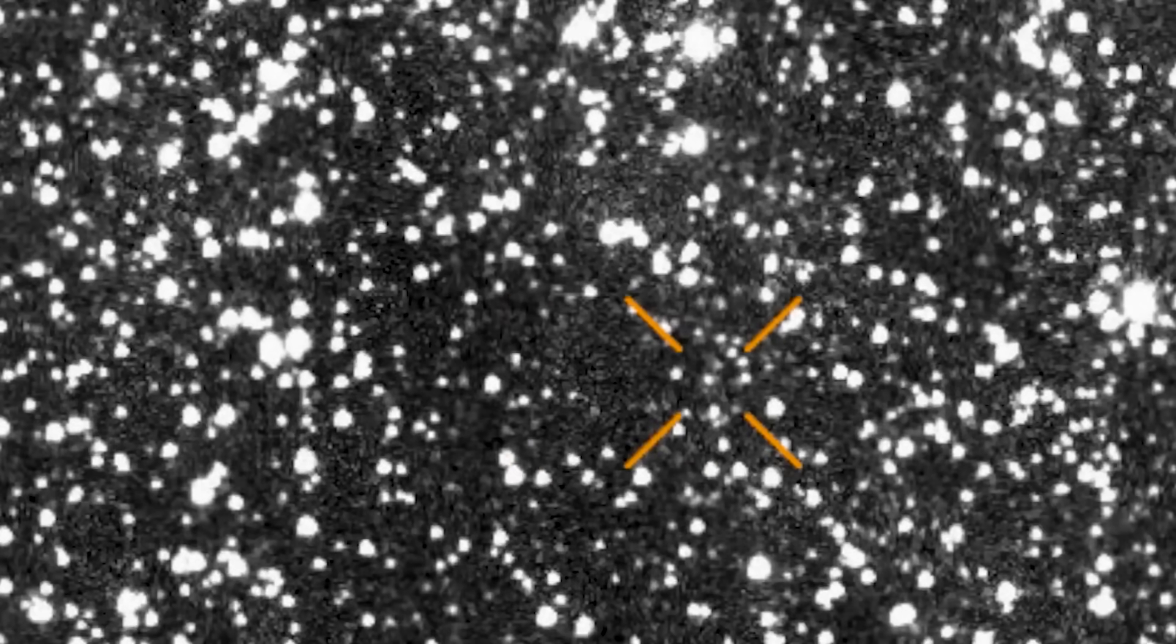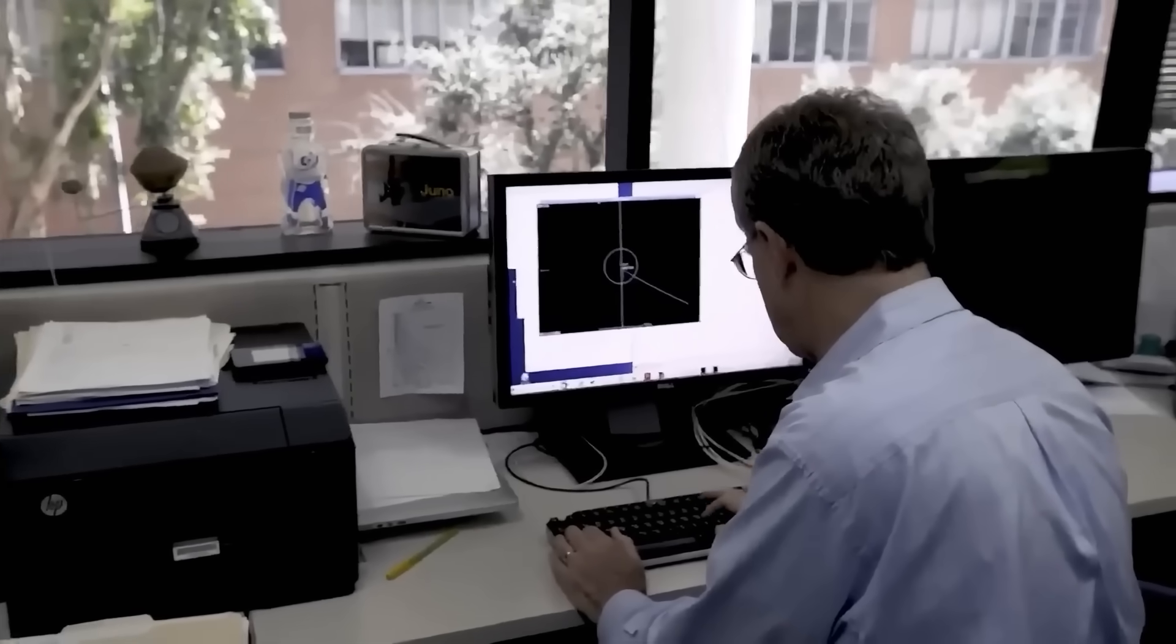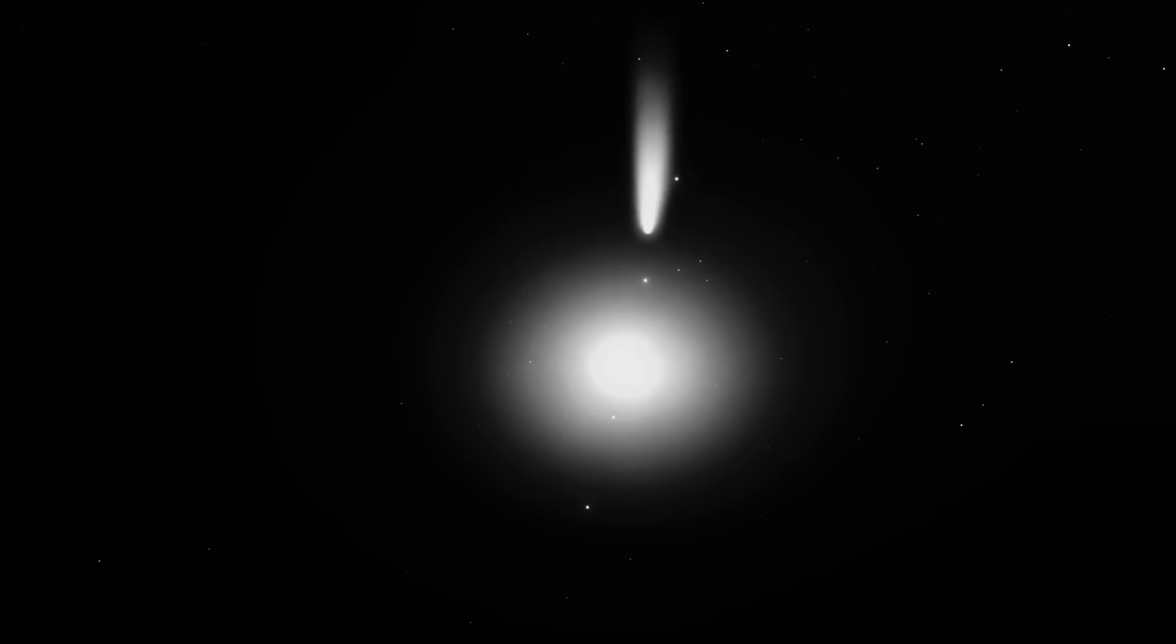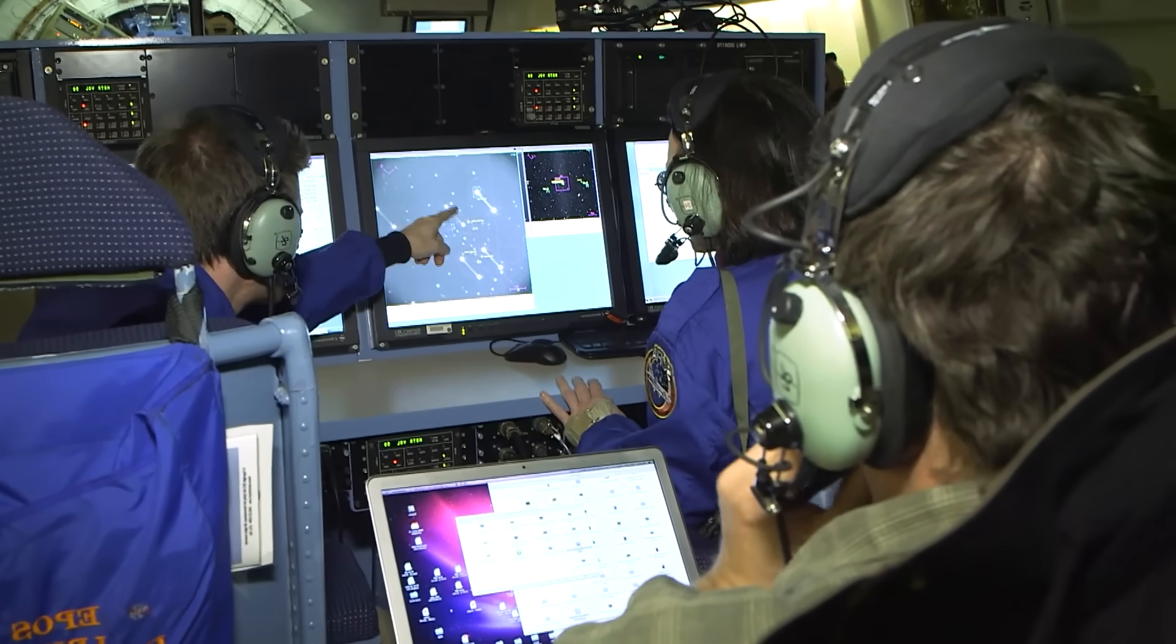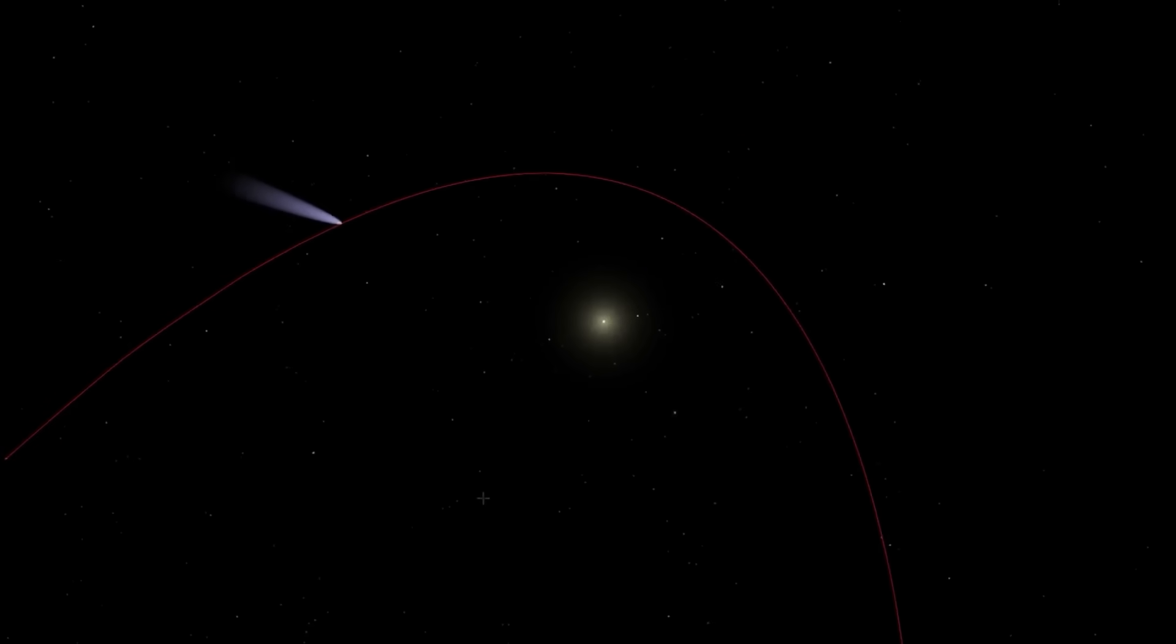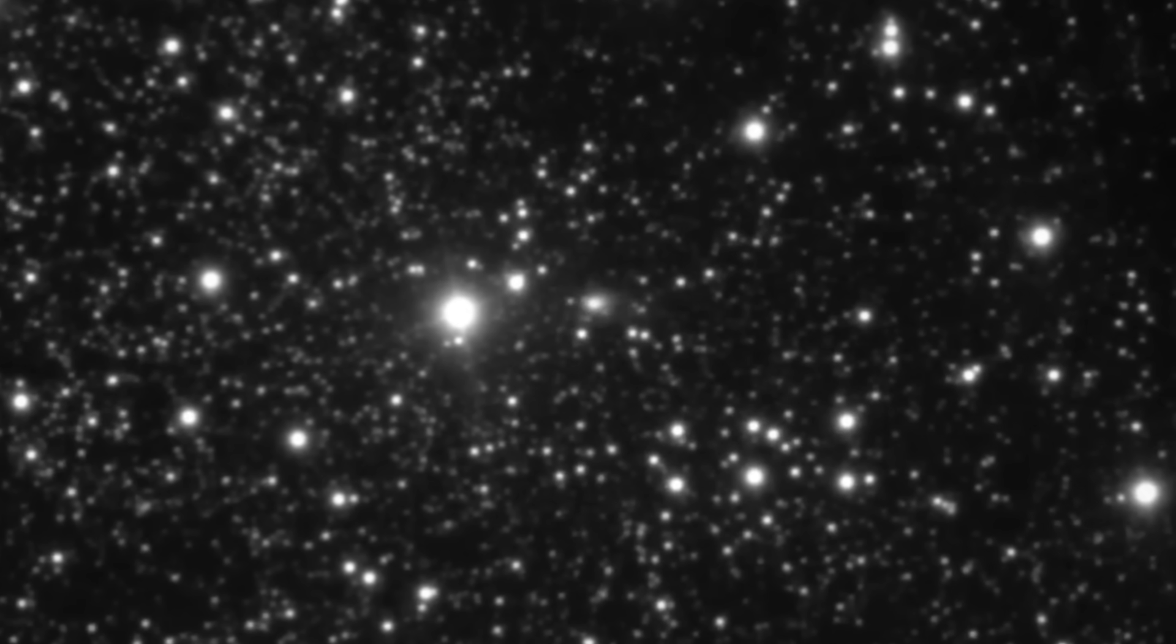Loeb says we are being tested, not by aliens, but by our own curiosity. Will we be brave enough to confront what the data tells us, even if it points towards something we're afraid to admit? For centuries, humanity has looked up and asked if we're alone. Maybe the better question is, are we ready not to be? As 3i/ATLAS moves toward its hidden encounter with the sun, telescopes around the world are trained on it. The data streams in, the numbers fluctuate, and every new observation deepens the mystery. If it emerges from the sun's glare unchanged, we may still be dealing with the strangest natural object ever found. But if it alters its path, or worse, vanishes, then the age of denial will be over.